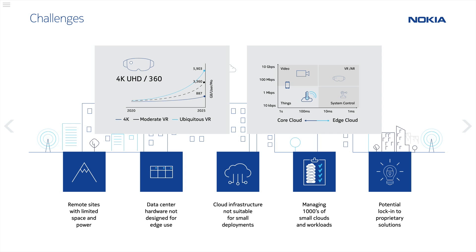Moving everything to the edge is not a challenge-free proposition. These edge clouds are many small data centers close to subscribers — they might be at a switching office or a telco shack at the base of a cell tower. They're much smaller than the typical CO data centers, and by definition have limited space and power. The existing infrastructure currently in the central offices is simply not designed for these smaller sites that number into the thousands. Vendors may come up with solutions, but those solutions have the possibility of creating lock-in.